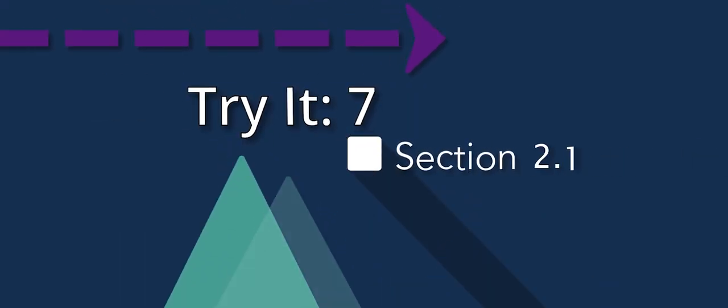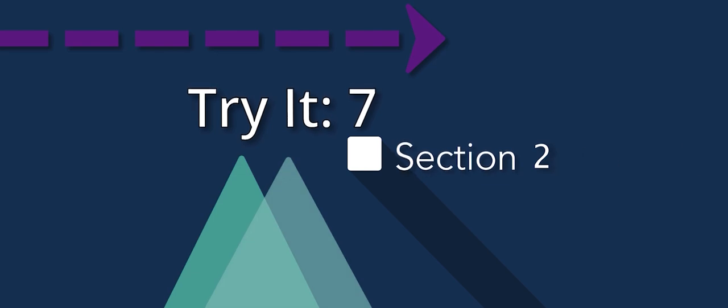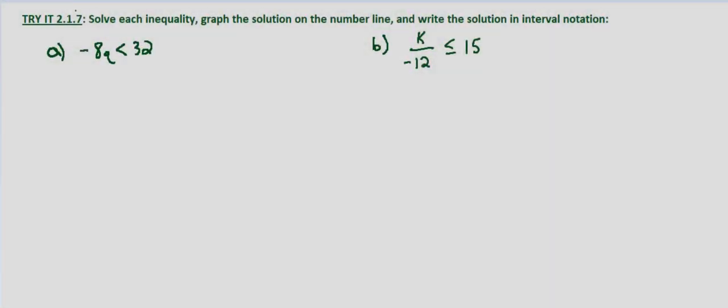In this exercise we're looking at something that I referred to in an earlier example, and that's that when we divide or multiply both sides of an inequality by a negative value, we have to change the direction of the inequality symbol.